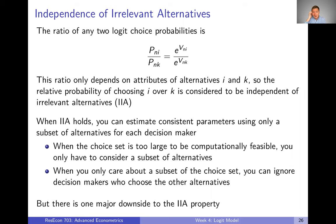We can see this if we take the ratio of two logit choice probabilities — the choice probability for alternative I and alternative K. Remember, they're both going to have the same denominator, so those cancel out. When we take this ratio, it's just going to be the exponential of I's representative utility divided by the exponential of K's representative utility. So this ratio, the probability of choosing I over K, only depends on attributes of alternative I and K.